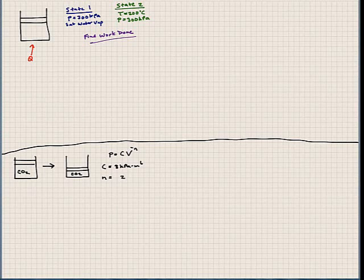For the top problem we have a cylinder full of saturated water vapor, and the pressure in this piston cylinder is 300 kilopascals. If we heat it, we know the temperature will increase, and the temperature increase goes up to 200 degrees Celsius, and what we are asked to do is find the work done.